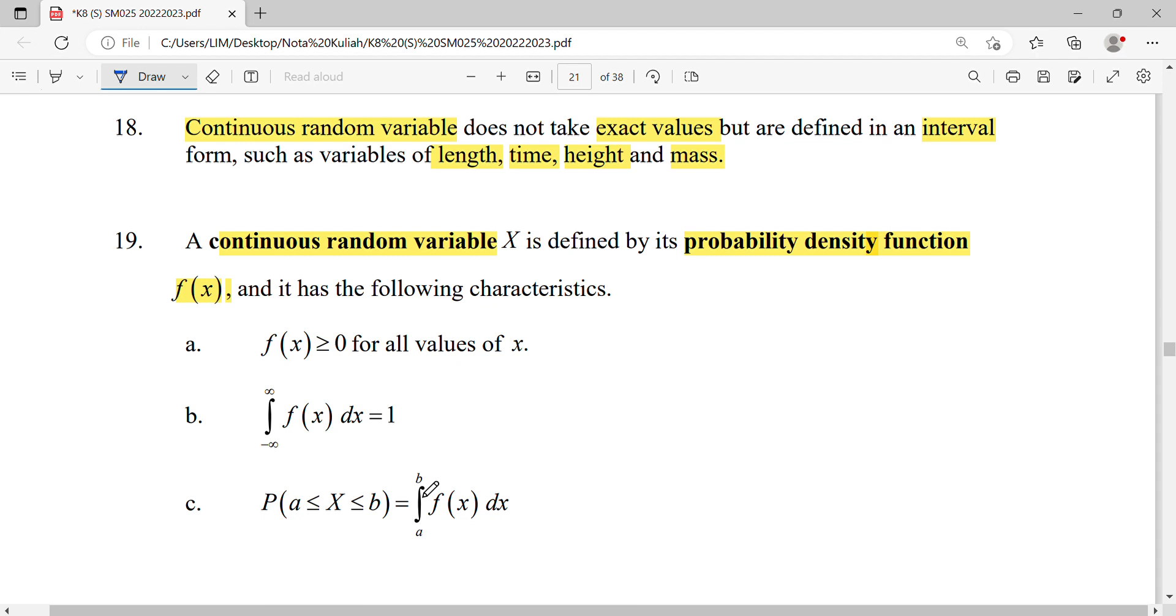In other words, for continuous random variables, your probability is in the form of a graph—a continuous graph. Therefore, the area under the graph represents your probability. To find this area, you need integration. The total probability equals one.